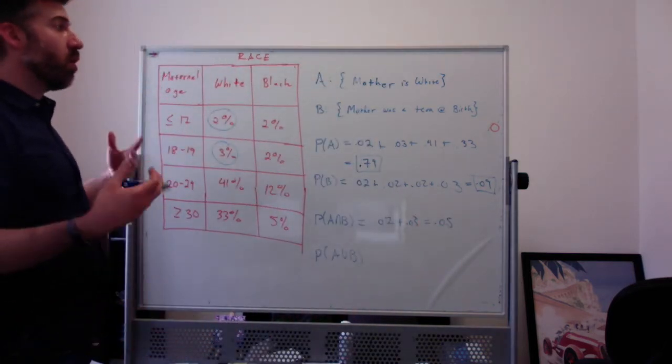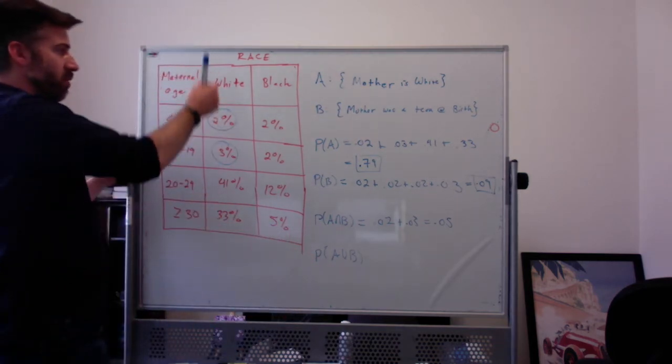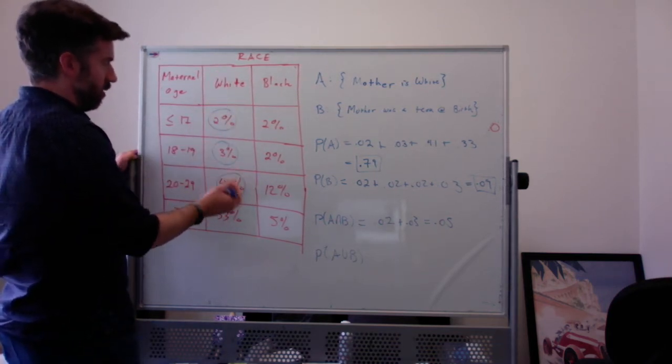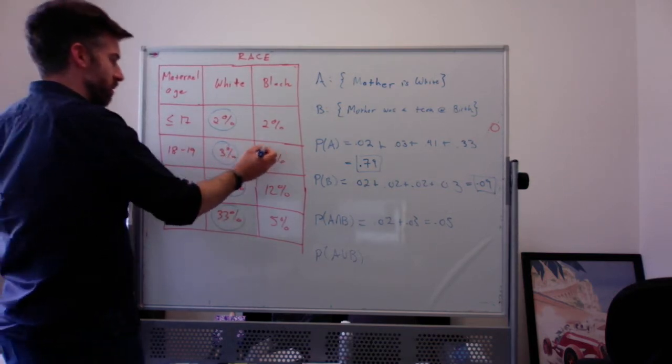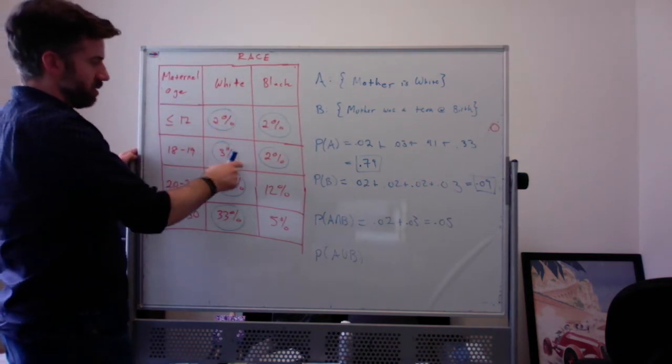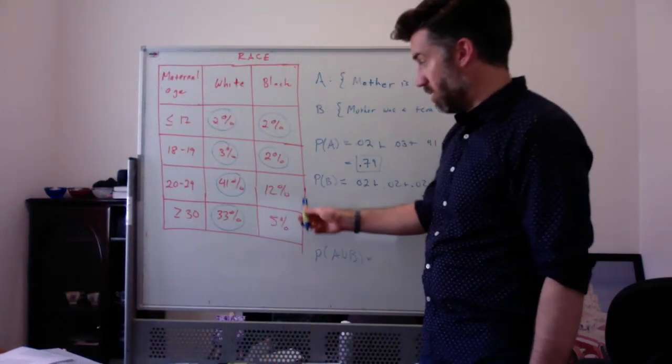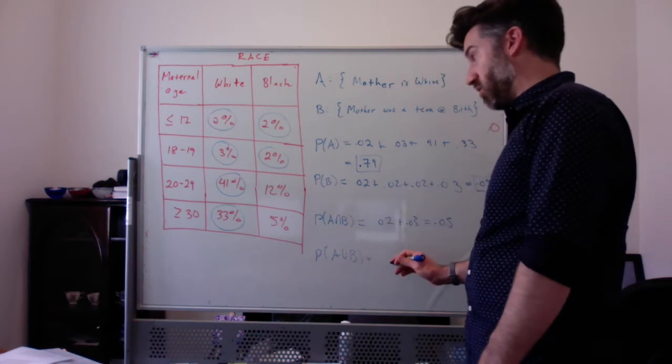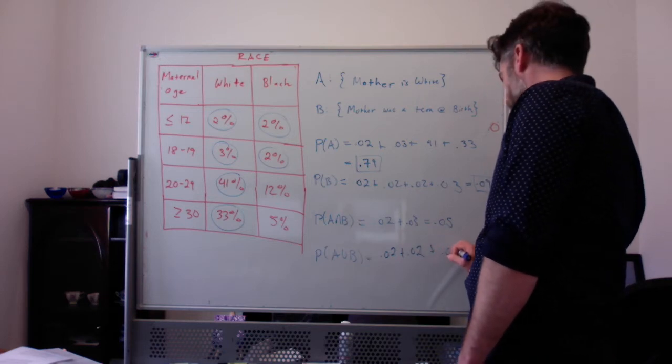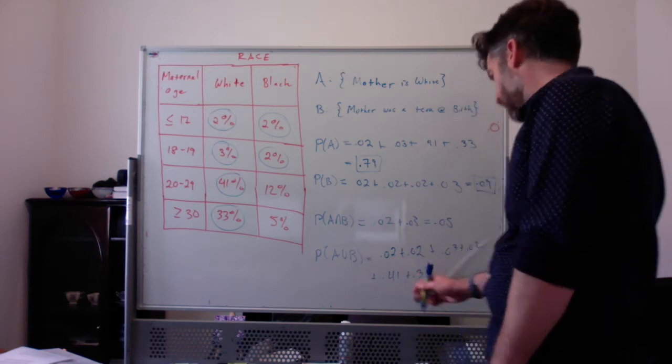The probability the mother is white or was a teen at birth, or the probability of A union B, is the probability of being white or being a teen. So that means it's going to be all of the white boxes, or all the boxes that are a white mother, and all the boxes that are a teen mother. So all six of those boxes, that's going to be 2 plus 2 plus 3 plus 2 plus 4 plus 33.